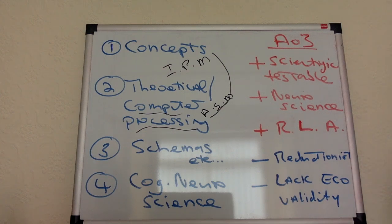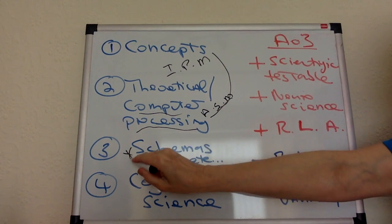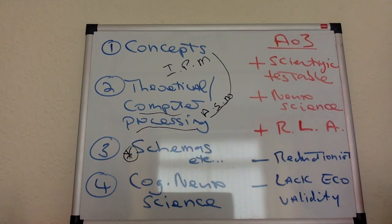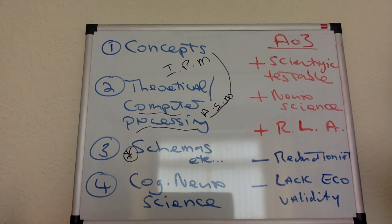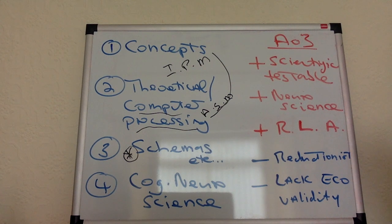This model, very early on, developed the idea of schemas. Schemas are very crucial here — you all know what they are because you covered this in Paper 1. They are like a package of information in our brain or memory which can be about anything at all. Babies are born with very basic motor schemas — for clutching onto things, opening their mouths — but as we develop, it becomes more and more like a mental process.